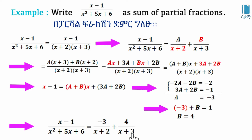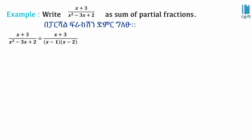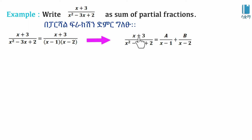Now consider (x + 3) over (x² - 3x + 2) for partial fraction decomposition. We factorize x² - 3x + 2 as (x - 1)(x - 2). We introduce partial fractions A over (x - 1) plus B over (x - 2).